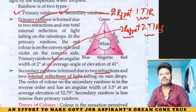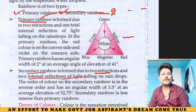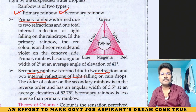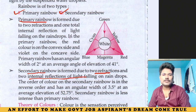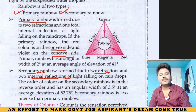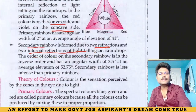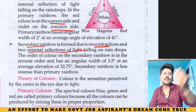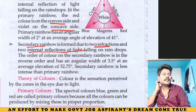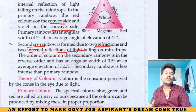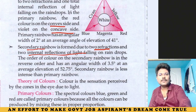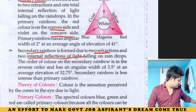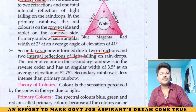In the primary rainbow, the red color is on the convex side and the violet is on the concave side. We will discuss refractions in concave and convex lenses in the next video.